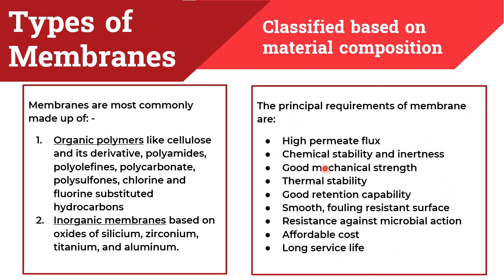These are the principal requirements of a membrane: high permeate flux — flux is the flow rate of water applied per unit area per time, and high flux increases diffusion or filtration efficiency — then chemical stability and inertness, good mechanical strength, thermal stability, good retention capabilities, and smooth and fouling-resistant surface. Membrane fouling is a process by which particles, colloids, or solute macromolecules are deposited or adsorbed onto membrane pores or surface through physical, chemical, or mechanical interactions, resulting in smaller or blocked membrane pores. Additional requirements are resistance against microbial action, affordable cost, and long service life.